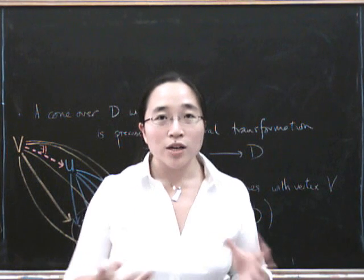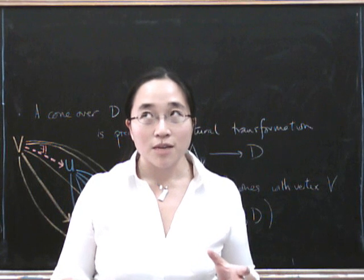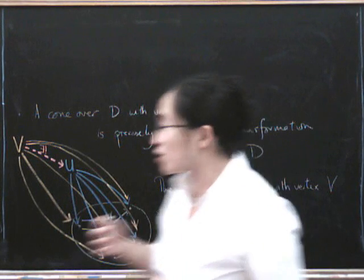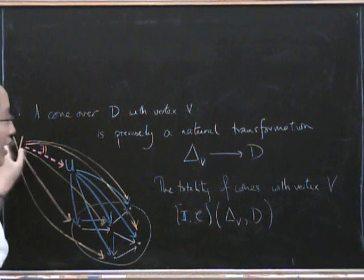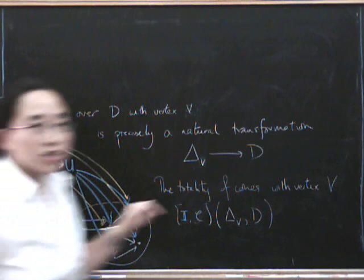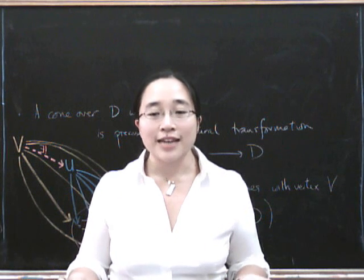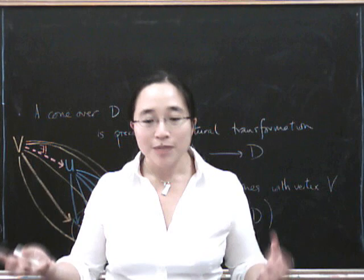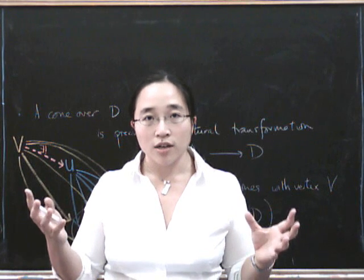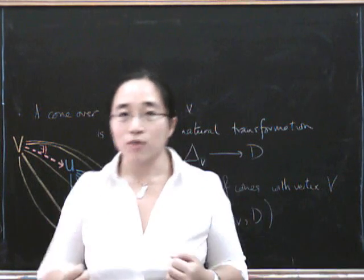So I'm going to say two words of warning first. First of all, what we're trying to say is, for every cone, there exists a unique factorization. Now whenever anybody says for every something or other, there exists a unique something or other, there must be some kind of bijection going on, because it's a for all, there exists unique, right?